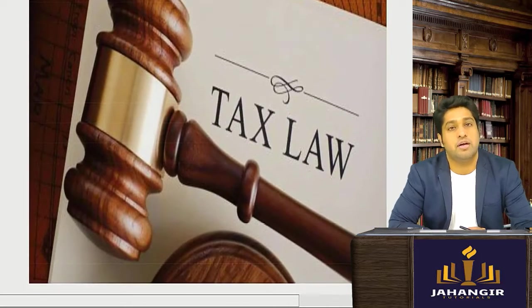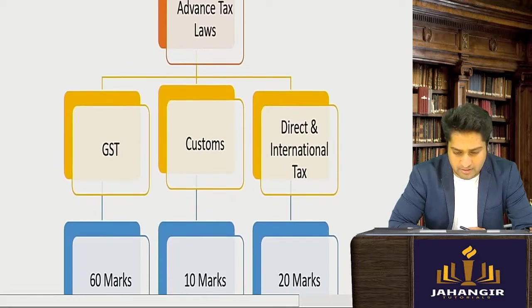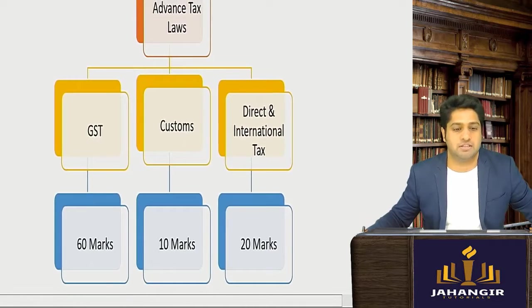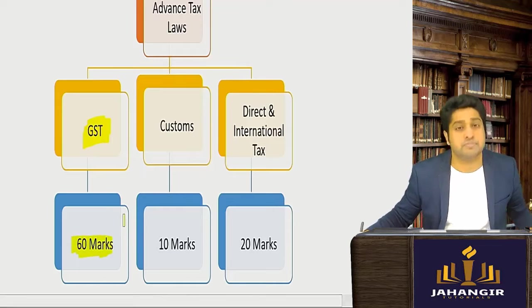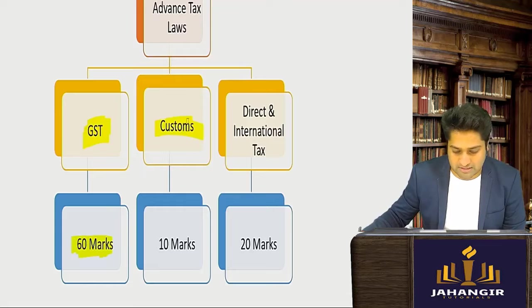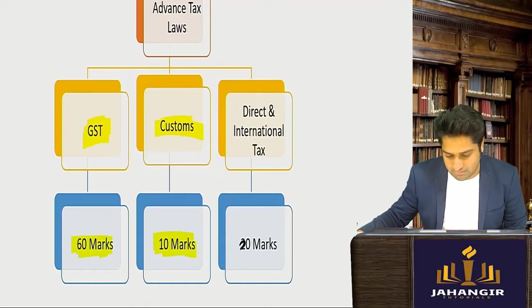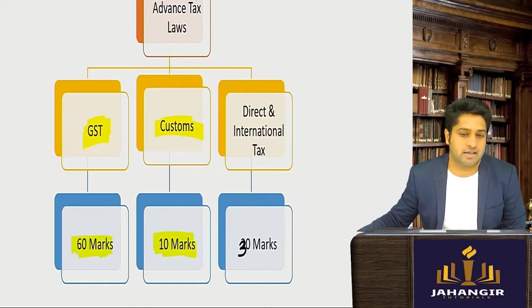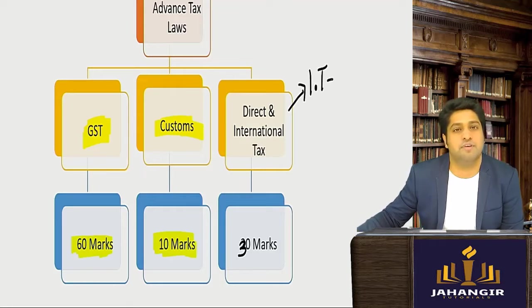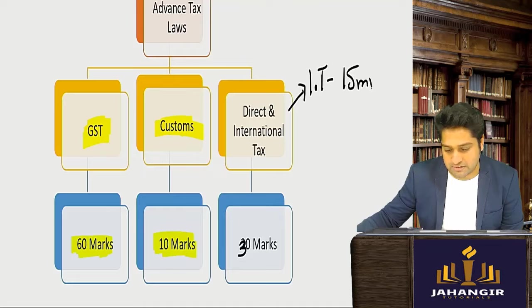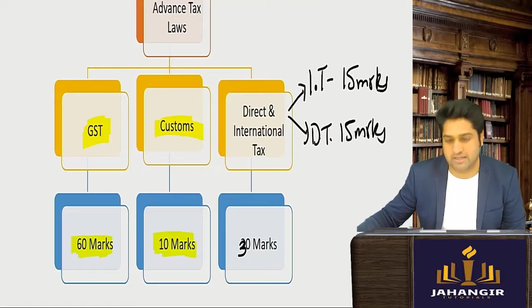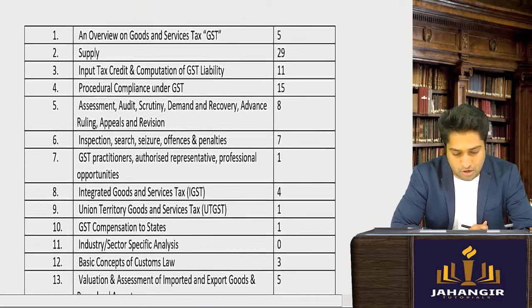Next is tax laws. The Institute has divided this into three parts. Part one is GST, which comes for around 60 marks. Customs comes for around 10 marks, making a combined total of 70 marks for indirect tax. The remaining 30 marks is direct and international tax. Ideally, international tax is very predictable — around 15 marks — and your other 15 marks is direct tax.